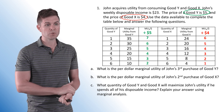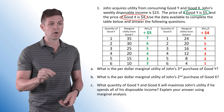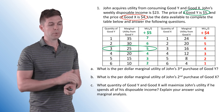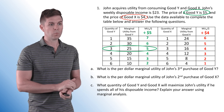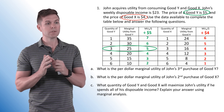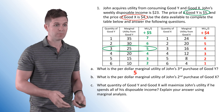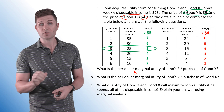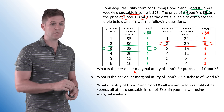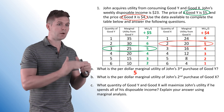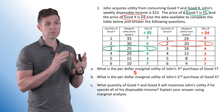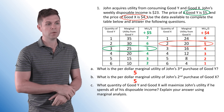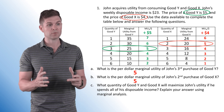What is the per dollar marginal utility of John's third purchase of good Y? Looking at the table, the third purchase of good Y gives a per dollar marginal utility of 5. What is the per dollar marginal utility of John's second purchase of good X? The marginal utility is 20, but the per dollar marginal utility is 5 as well. So both answers are 5.